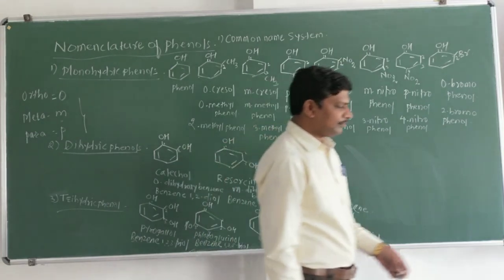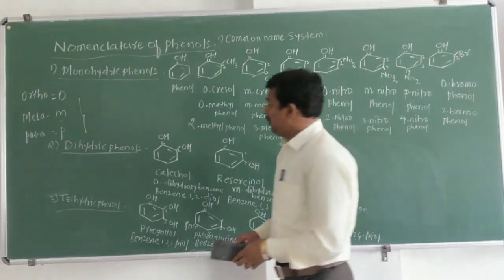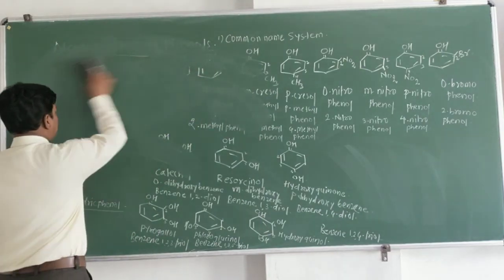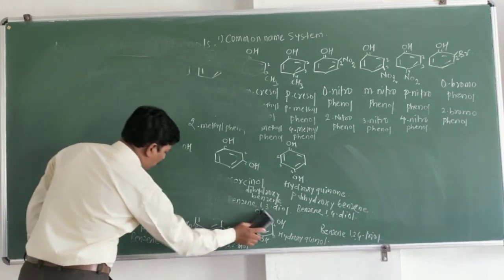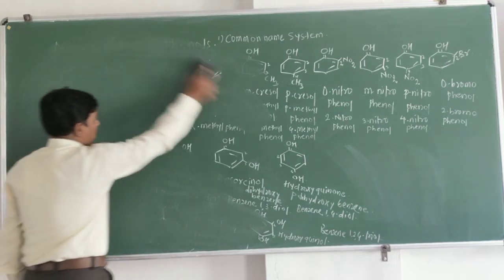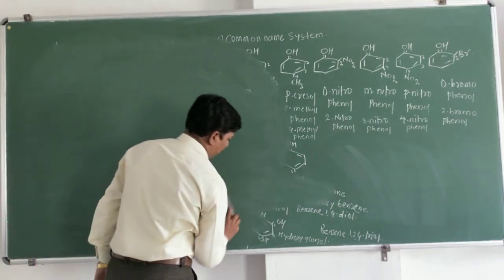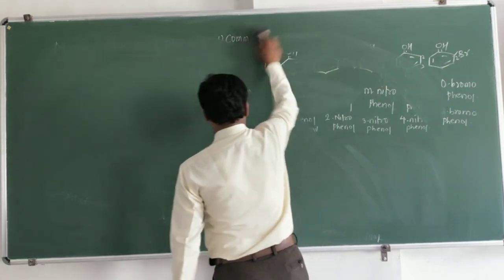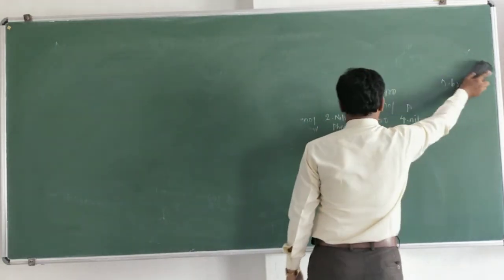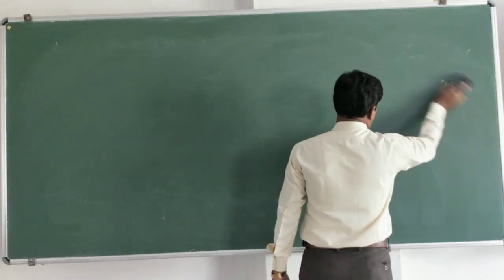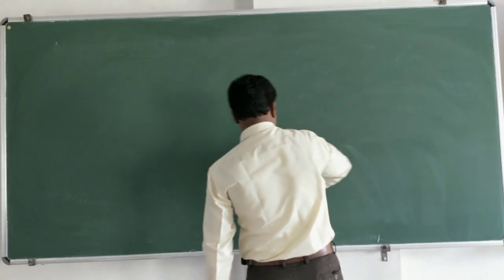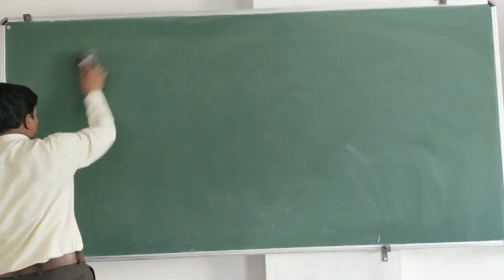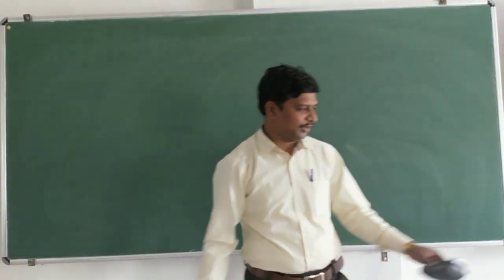So in this way we have discussed the nomenclature of the phenols. In the common name system, ortho, meta, and para prefixes are used. In the IUPAC system, like aliphatic compounds, you give numbers to the carbon atoms present in the benzene ring. In this way we have completed the nomenclature of phenols. Thank you.